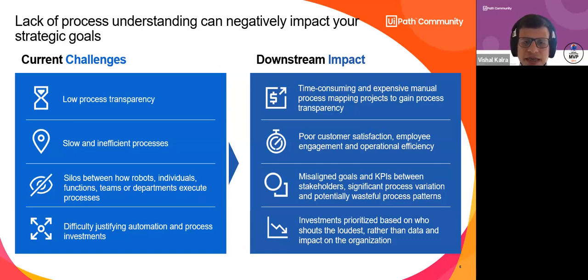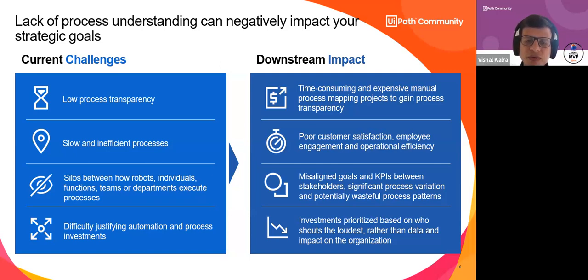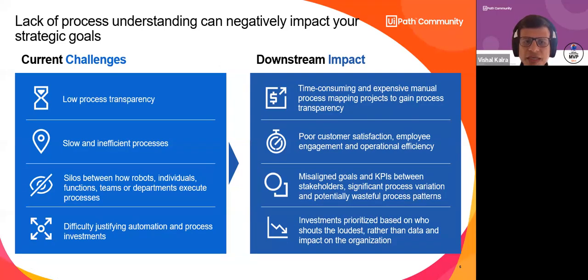Different teams are involved — the requisition department, vendor team, finance team, and management. If you're only working with one department, you might miss the entire end-to-end lifecycle. Working in silos means you don't get the whole picture and won't reap the benefits of automation. You need to understand the whole process to identify your bottlenecks and where you can do optimization and automation.